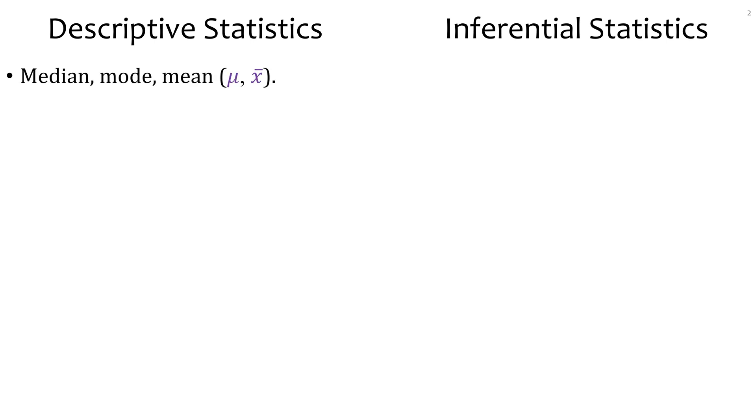Do you recall the two main branches of statistics? One of them is called descriptive, the other one is inferential. In descriptive, we talk about things like the measures of central tendency: median, mode, and mean. The mean is the same as the average. This is a Greek letter, Greek M called mu (μ) for the population mean and x̄ is for the sample. So we have the population versus sample.